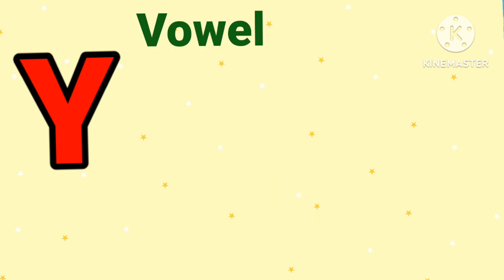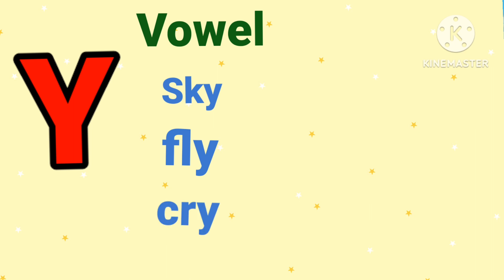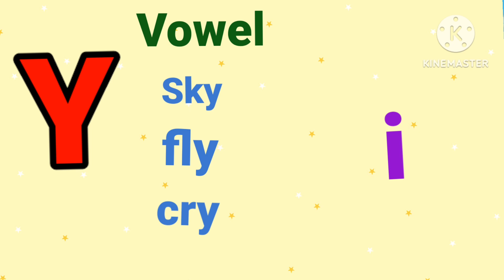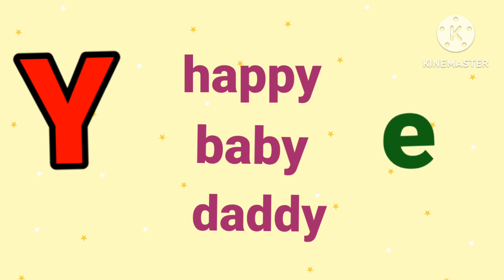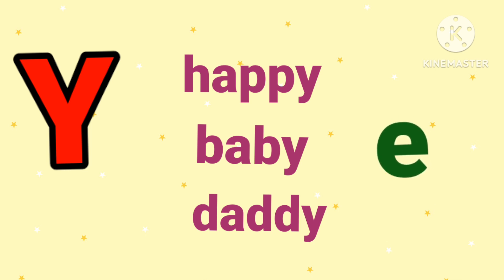Let us start with vowel. For example: sky, fly, and cry — here the letter Y makes an 'I' sound. The letter I is a vowel, so in these examples letter Y is considered to be a vowel. It is important to remember: letter Y is a vowel when there are no other vowels in the word. Similarly, in the words happy, baby, and daddy, the letter Y makes an 'E' sound. Letter E is a vowel, so in these examples letter Y is considered to be a vowel.